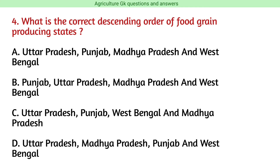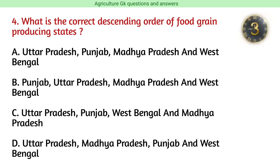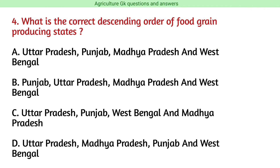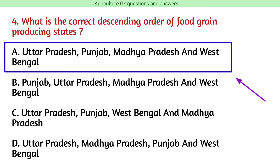Question number 4. What is the correct descending order of food grain producing states? The correct answer is option A, i.e., Uttar Pradesh, Punjab, Madhya Pradesh, and West Bengal.